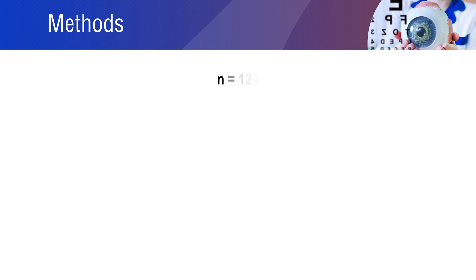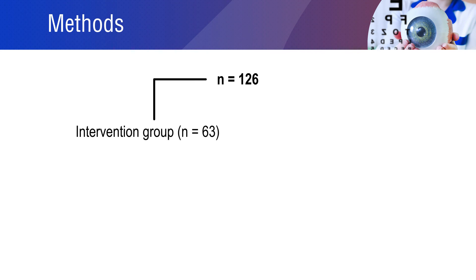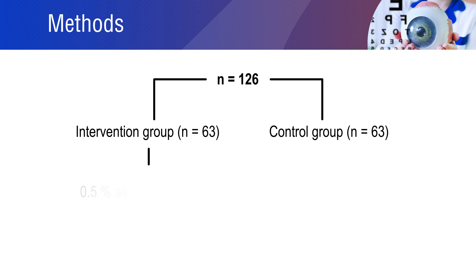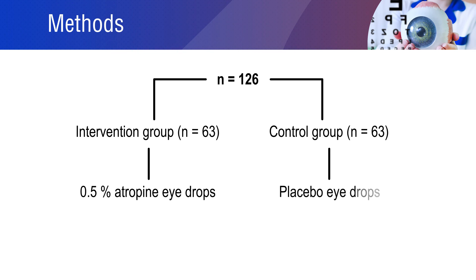Overall, there were 126 subjects in the study. Out of which, 63 subjects were randomly allotted to the intervention group, and the remaining 63 subjects were allotted to the control group. The intervention group received 0.5% atropine eye drops, and the control group received placebo eye drops.